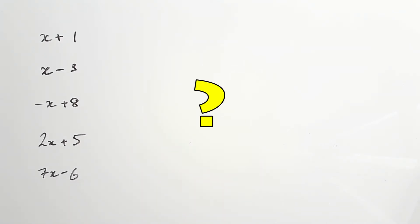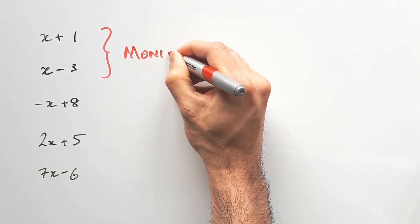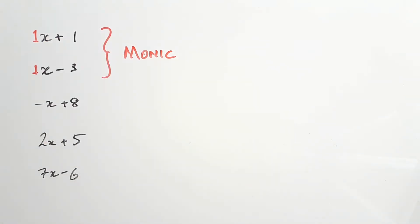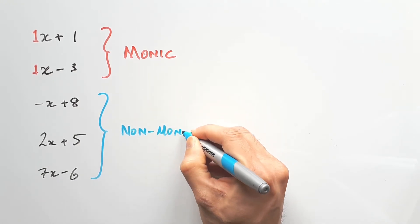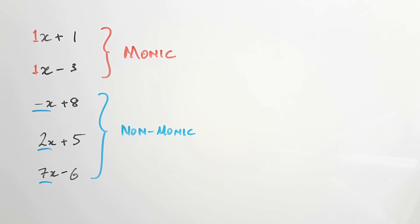What's the difference between these expressions? The first two are known as monic, because the coefficient in front of the leading terms are both positive 1. The other three terms use negative 1, 2, and positive 7. These are known as non-monics, because it's not positive 1.